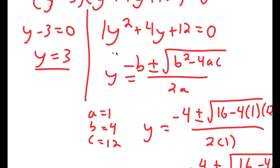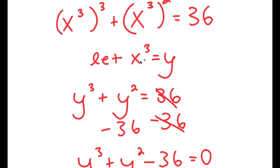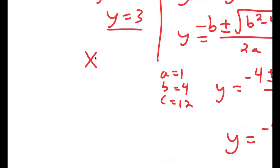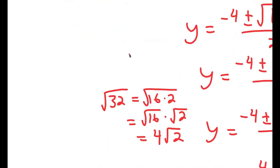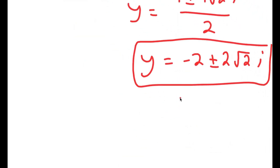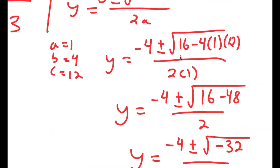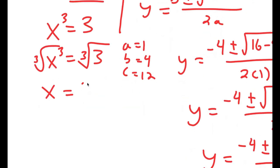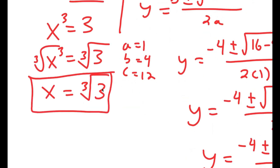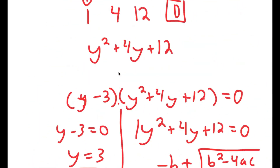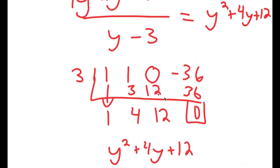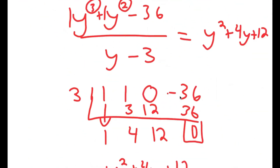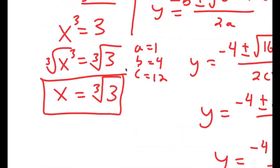I have three solutions for y, but remember I let x to the power of 3 equal y. So x cubed equals 3 gives a real solution, but x cubed equals a complex number is not usable. So the only solution is y equals 3, and taking the cube root on both sides gives x equals the cube root of 3. Remember: when solving problems like these, always find one solution first, then use synthetic division to find the remaining solutions.